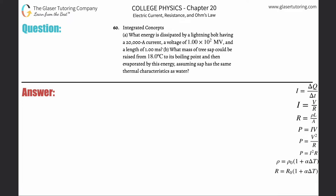Number 60, integrated concepts. What energy is dissipated by a lightning bolt having a 20,000 amp current, a voltage of 1 times 10 to the 2 megavolts, and a length of 1 millisecond?